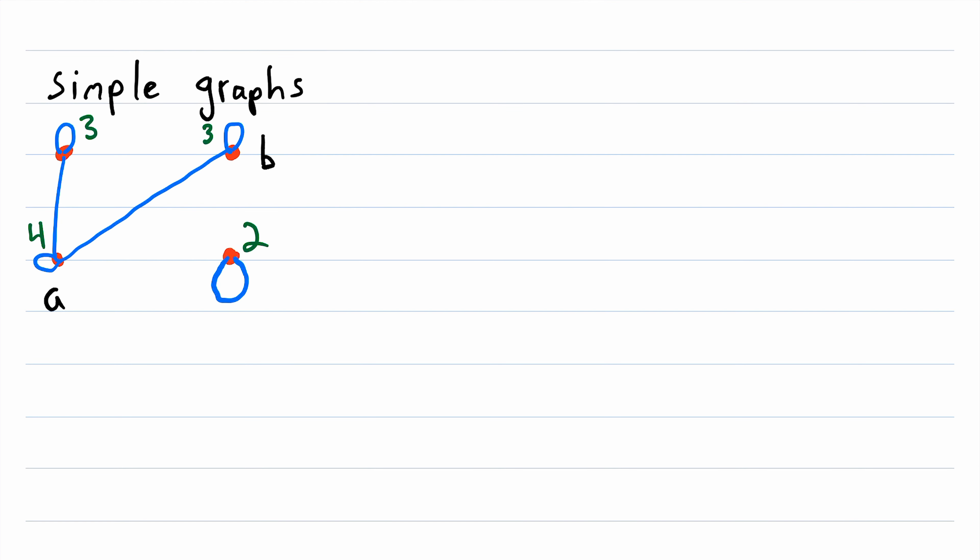Recall that with simple graphs we defined edges to be two element subsets of the vertex set. So this is a formal representation of this edge that joins a and b. Now notice that using normal sets like this for a loop could cause some confusion, because the repetition of elements in a set does not matter, so this is just equal to this.